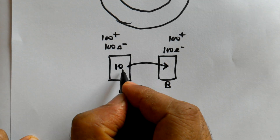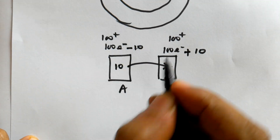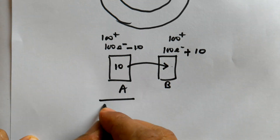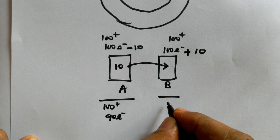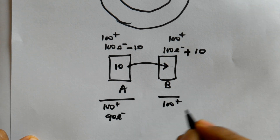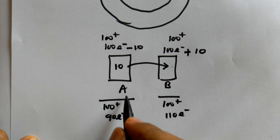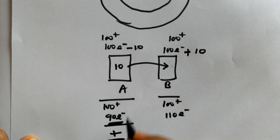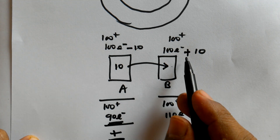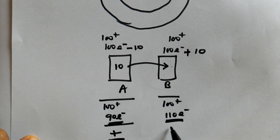Now suppose 10 electrons move from A to B. Then B will have 10 excess electrons, giving it 100 protons and 110 electrons. And A has lost 10 electrons, leaving it with 100 protons and 90 electrons. In A, there is an electron deficiency and a proton excess, so A becomes positively charged since it has lost electrons. Object B has gained 10 electrons — there are excess electrons over protons — so B gets excess negative charge. How much positive and negative charge that is, we will see next.